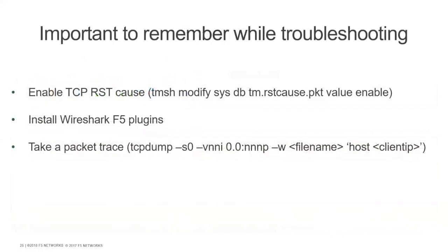Three important things to remember about troubleshooting. First, enable the TCP reset cause — this can be done via a specific command. This will enable the reset cause logging on packet traces captured via tcpdump, as we saw in the previous example. To see it, you need to install the Wireshark F5 plugin, which is available on DevCentral. Importantly, starting from Wireshark version 2.6.0 this comes by default and you don't need to install anything extra, but on previous versions you do need to install it.